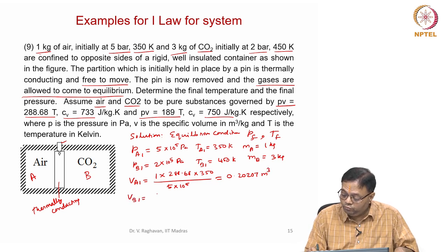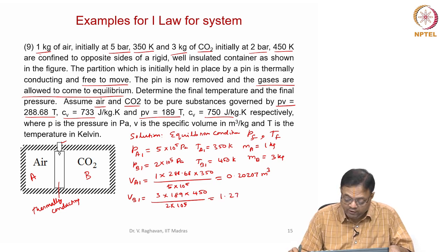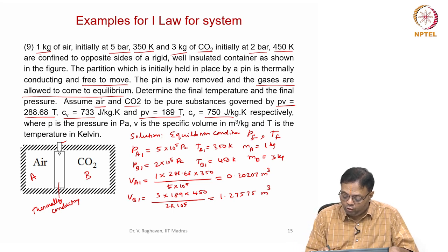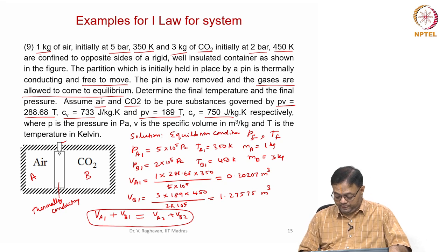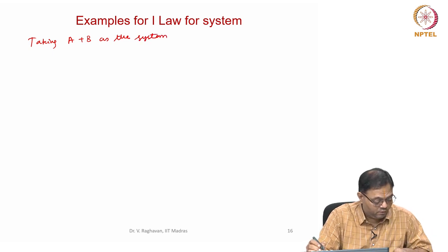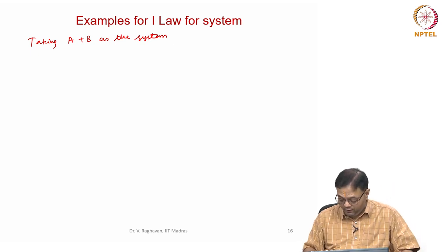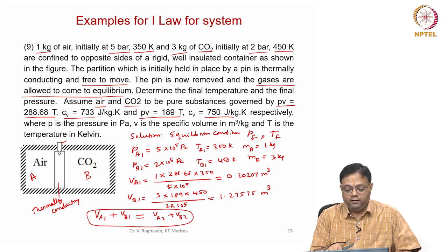Vb1 = 3 × 189 × 450 ÷ (2 × 10⁵) = 1.27575 m³. Like the previous problem, volume conservation gives Va1 + Vb1 = Va2 + Vb2. The container is rigid and totally insulated, so for A plus B as a system, there is no volume change and no heat transfer.